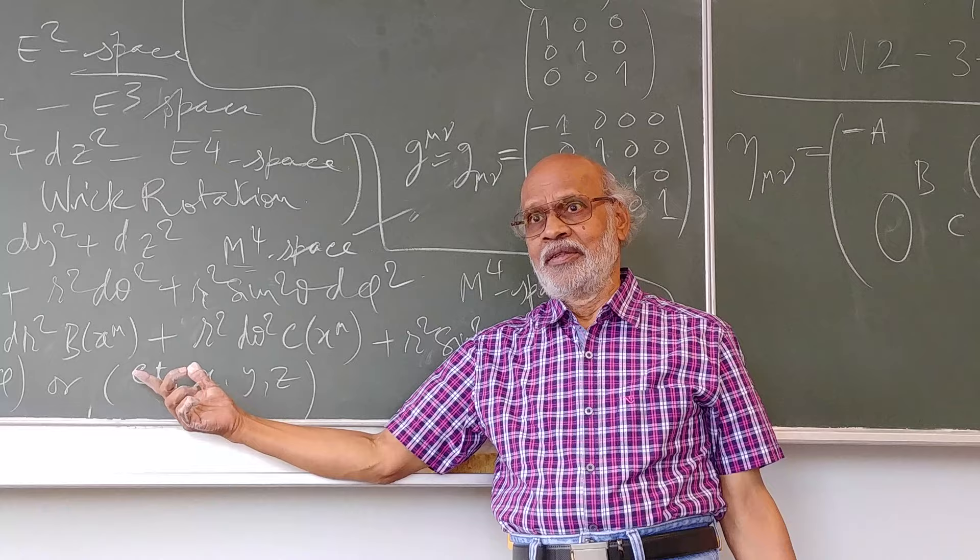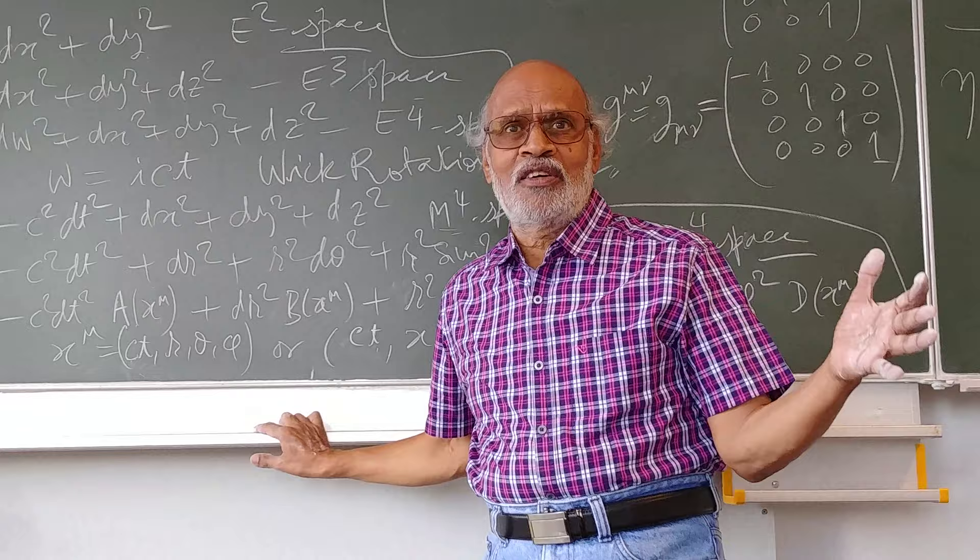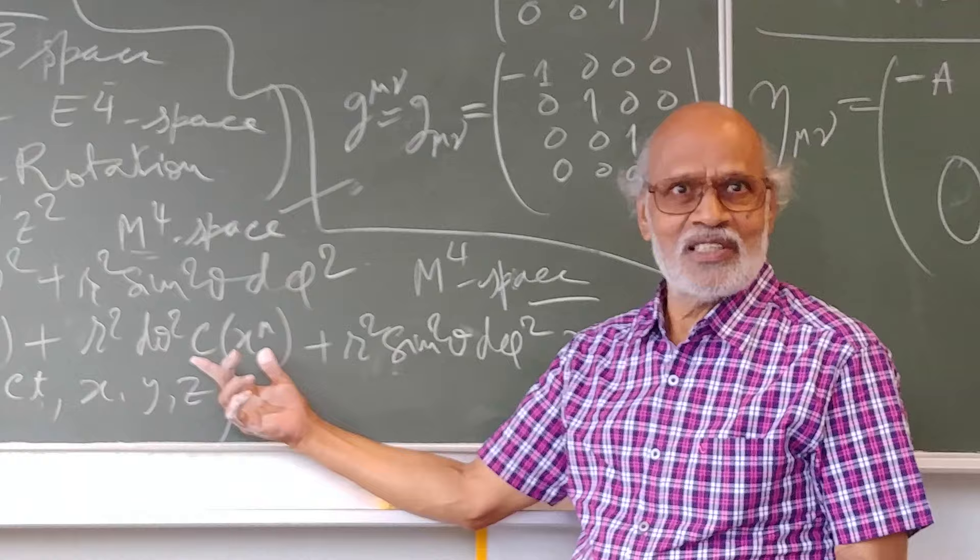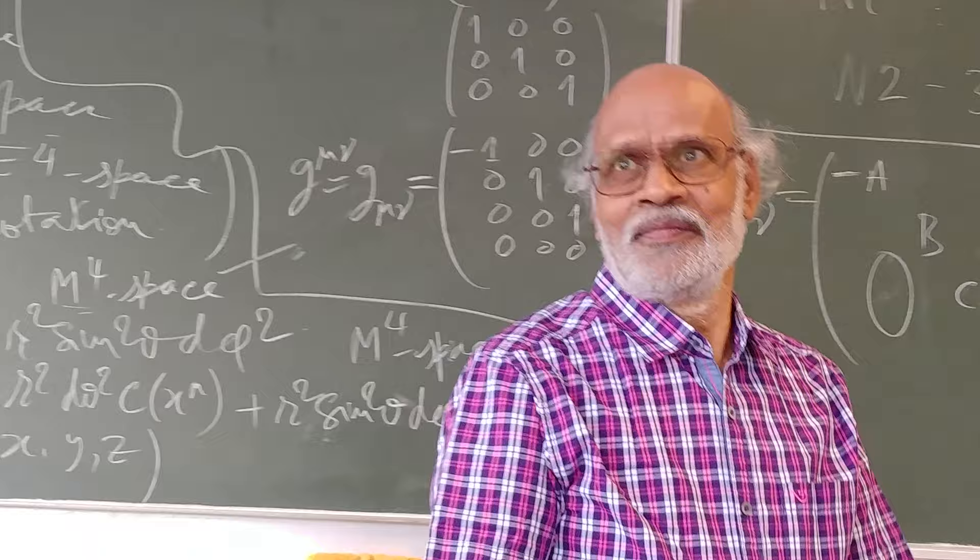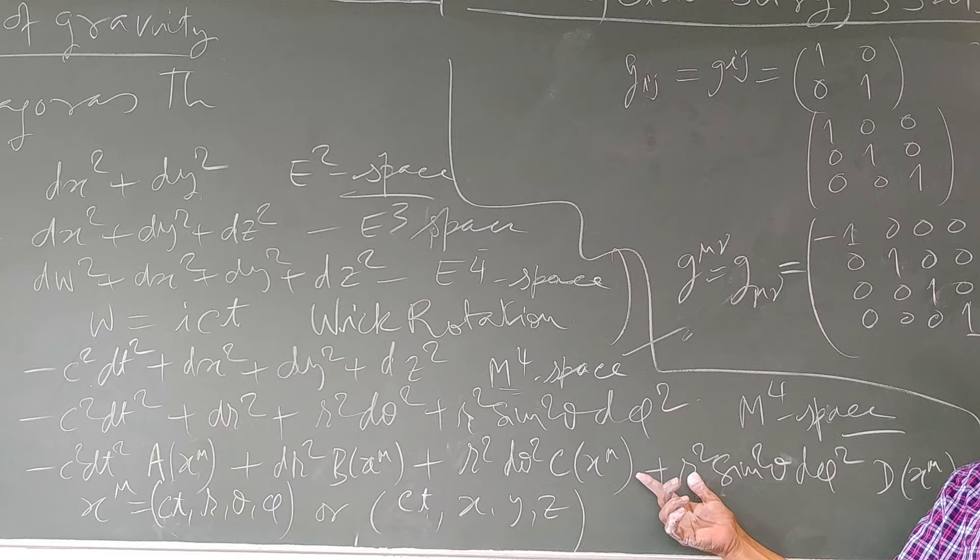So very often you find in the books some statements like gravity is a manifestation of the curvature of spacetime. And this precisely is this last equation, this last step, last relation for the value of ds squared. This precisely tells us that gravitation or gravitational force, whatever you like to call it, gravitation is a manifestation of the curvature of spacetime.